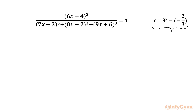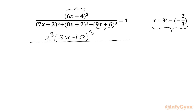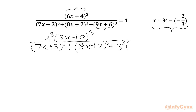So let's get started. As we can see, from this bracket we can take 2 common out, and from this bracket we will take 3 common out. So we will write 2 cubed times, and in the bracket we will get 3x plus 2 whole cube. In the denominator we will write 7x plus 3 whole cube. Then we have 8x plus 7 whole cube. Then we will take 3 common out, so it will come out as 3 cubed. So I can write 3 cubed in the bracket; 3x plus 2 will be left, power is 3.